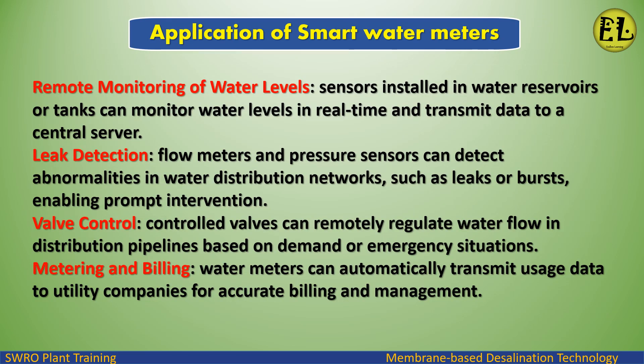Applications of Smart Water Meters. Remote Monitoring of Water Levels: sensors installed in water reservoirs or tanks can monitor water levels in real-time and transmit data to a central server. Leak Detection: flow meters and pressure sensors can detect abnormalities in water distribution networks, such as leaks or bursts, enabling prompt intervention. Valve Control: controlled valves can remotely regulate water flow in distribution pipelines based on demand or emergency situations, and metering.